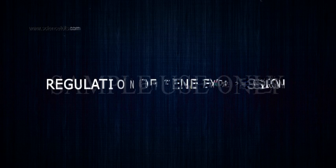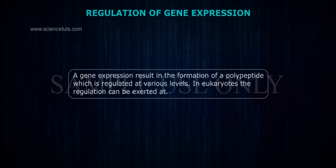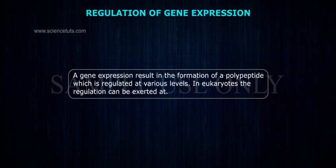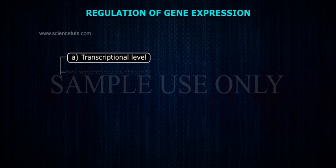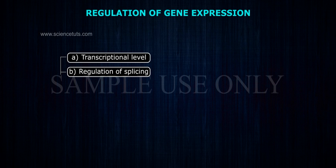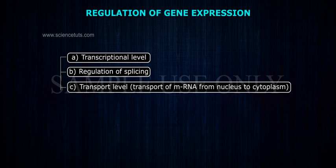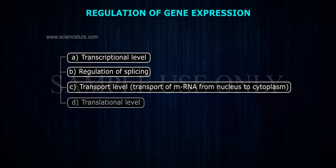Regulation of Gene Expression: Gene expression results in the formation of a polypeptide, which is regulated at various levels. In eukaryotes, the regulation can be exerted at: A. Transcriptional level, B. Regulation of splicing, C. Transport level — transport of mRNA from nucleus to cytoplasm, and D. Translational level.